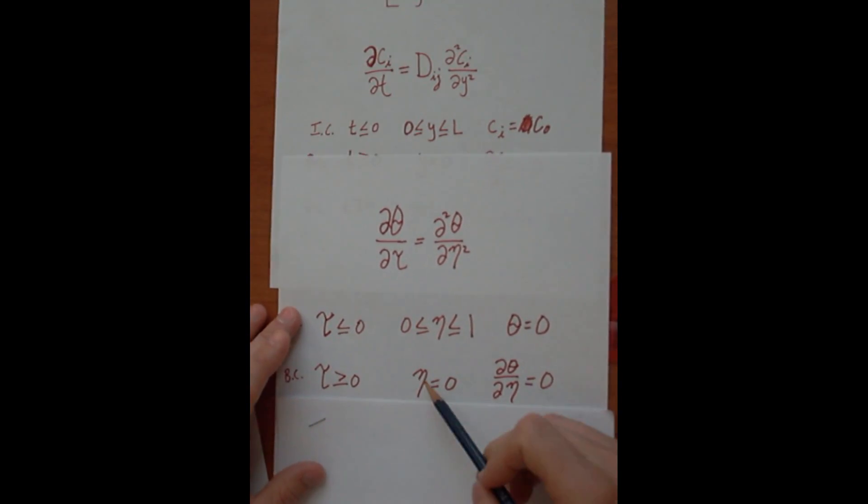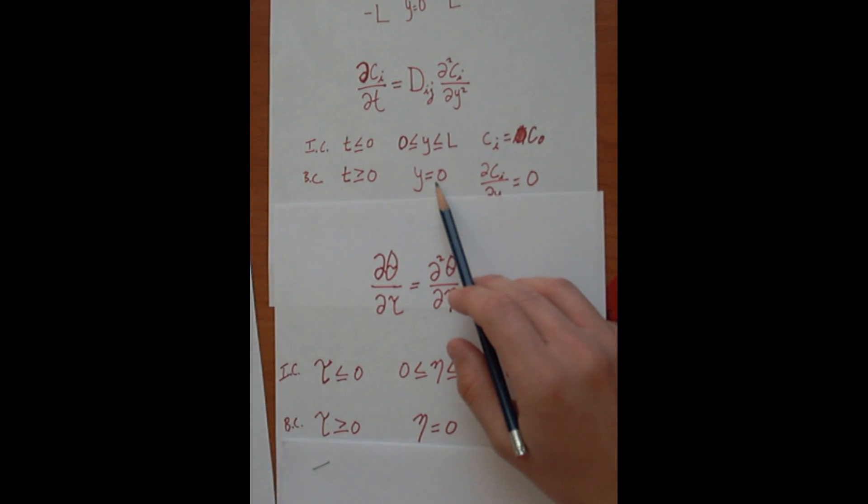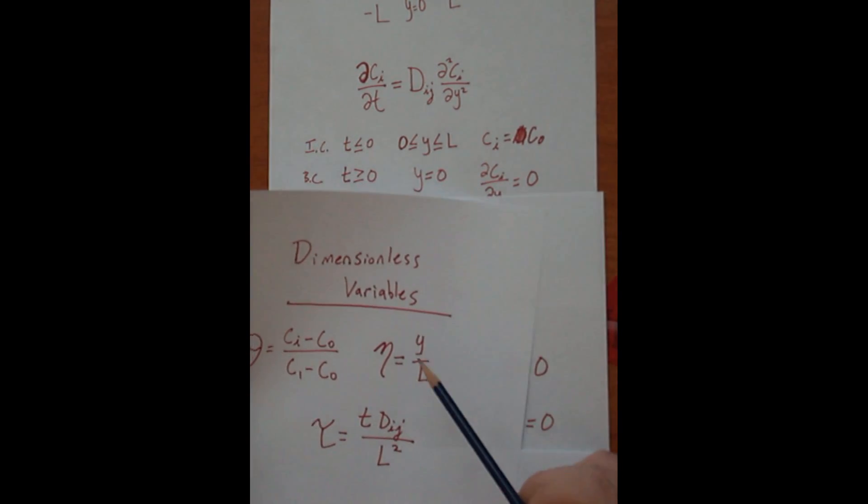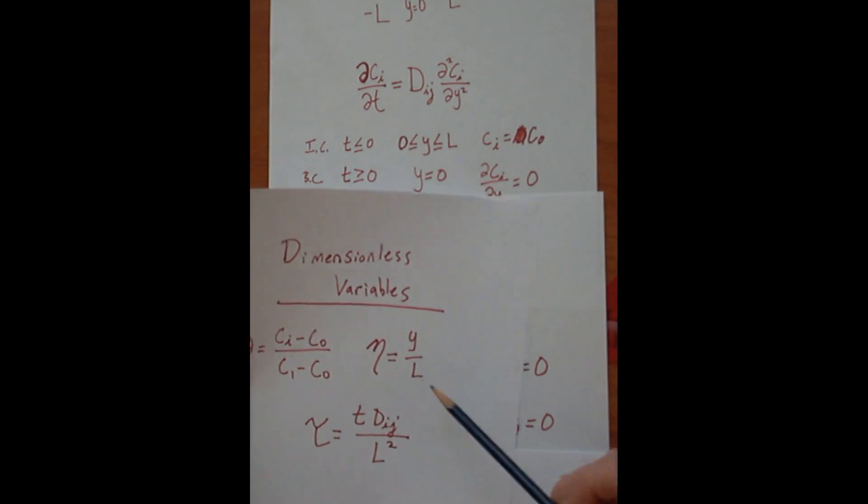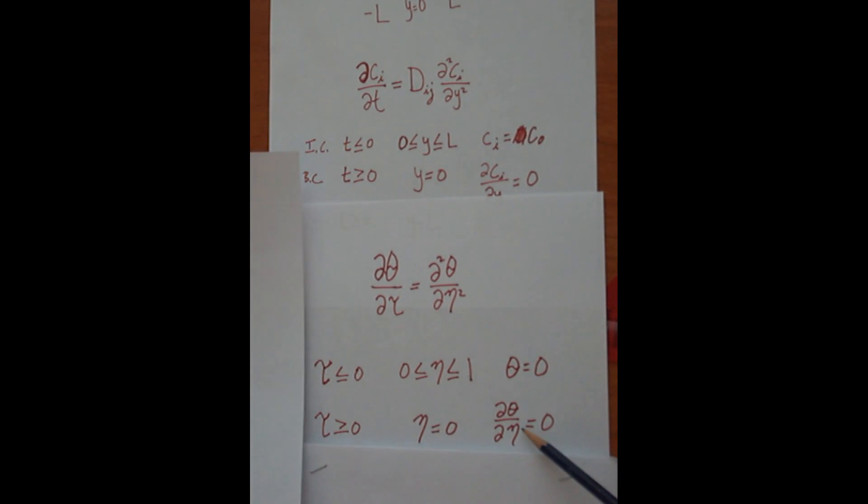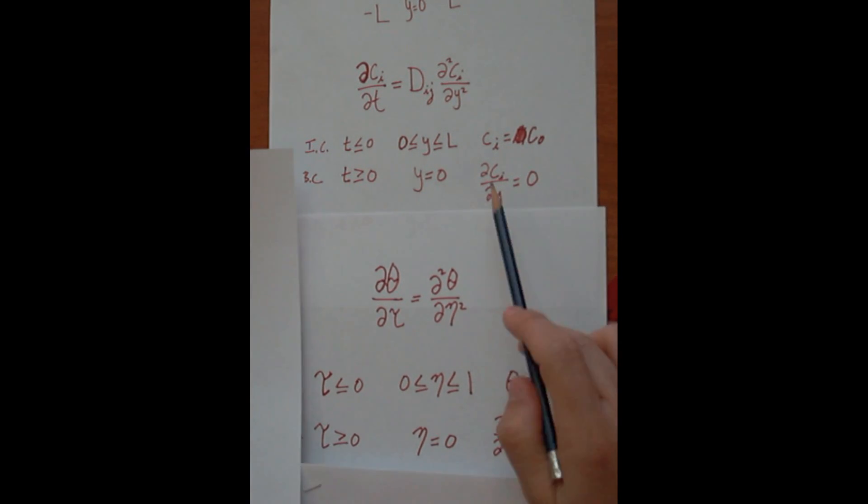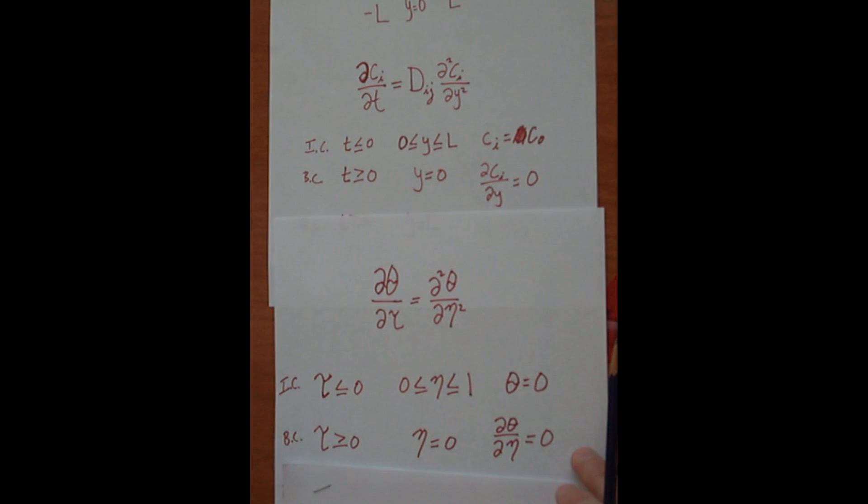The same goes for these other boundary conditions. Eta is going to be equal to zero, because again, Y is equal to zero. So Y zero over L is going to be zero. Your same reason here for the concentration gradient is also going to be equal to zero.